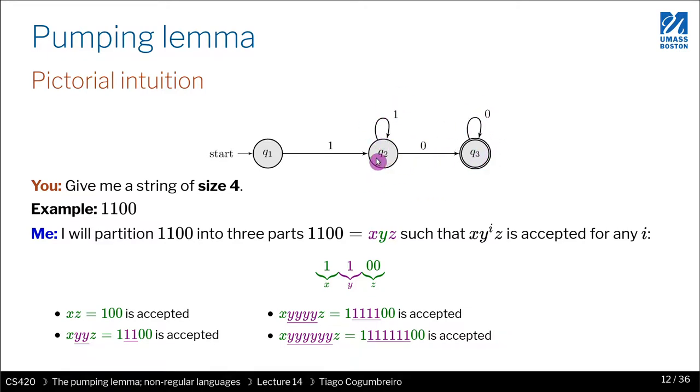And then the rest is whatever is here so 00. That means I can pump this one or I can omit it and the string will still be accepted because 100 is accepted which is this case, and then when you pump it you go through the loop twice it is also accepted.